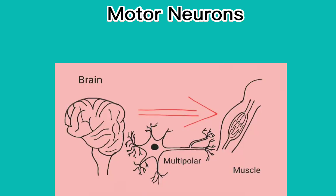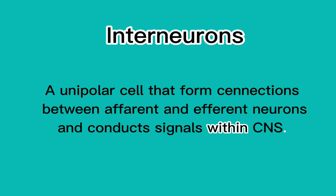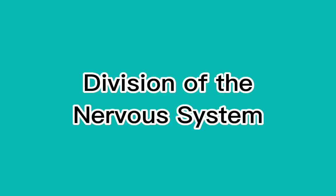Motor neurons conduct signals away from the CNS and stimulate responses in muscles and glands. They transmit commands from the CNS to the muscles, glands, and organs. Interneurons are unipolar cells that form connections between afferent and efferent neurons and conduct signals within the CNS.